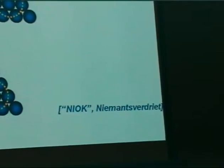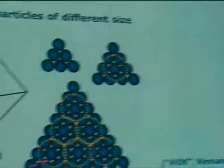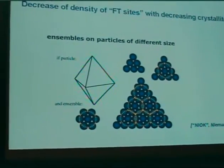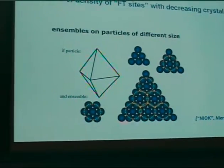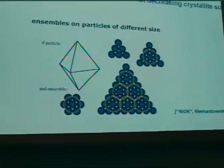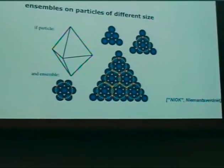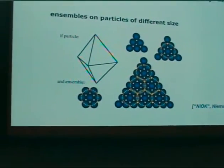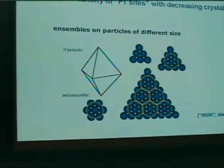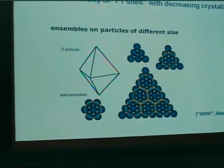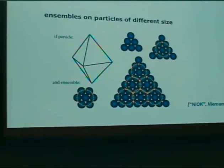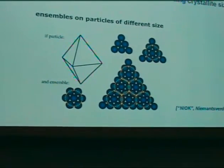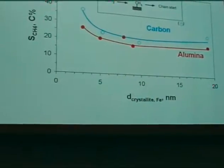These ensembles may have a certain size. We would find a certain number of these ensembles on large crystallites. If you go to smaller crystallites, the density of these ensembles would decrease. Eventually you get to a crystallite size so small that there would not even be one of these ensembles left, and that crystallite would therefore be completely inactive. That's our proposed explanation.